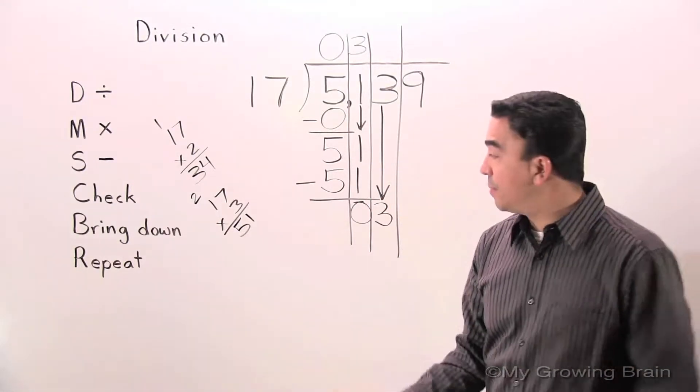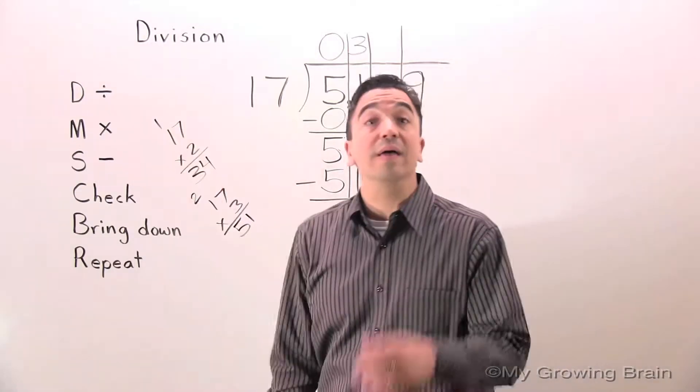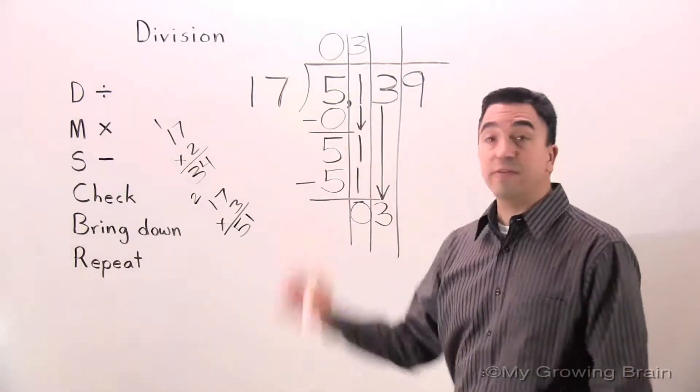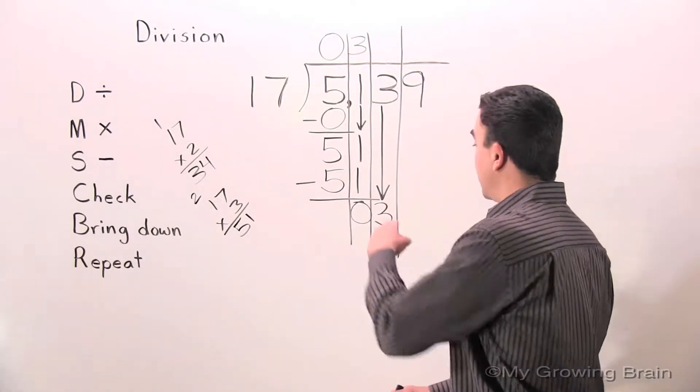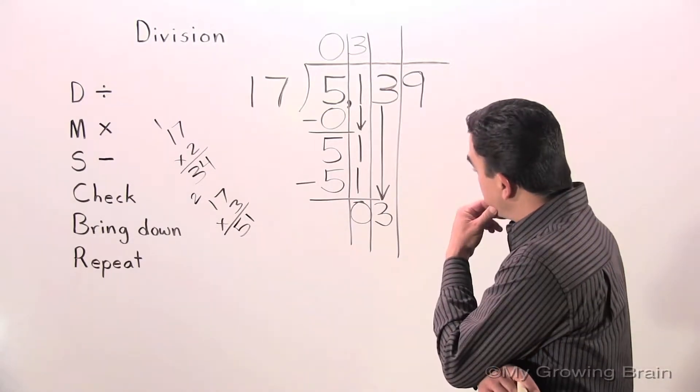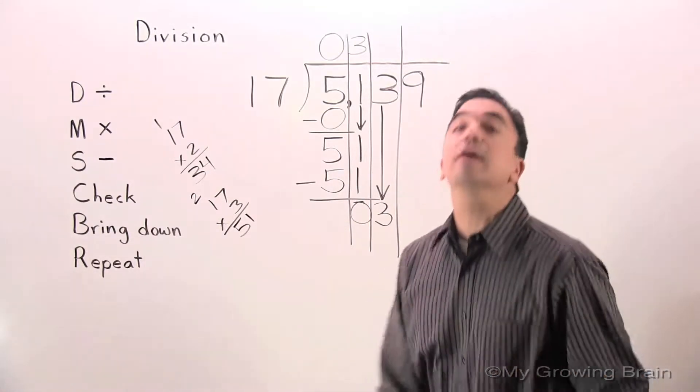Next step, repeat. Repeat the process. Back to the top. Divide. 3 divided by 17 or 17 into 3. Can't do it. Use a 0.